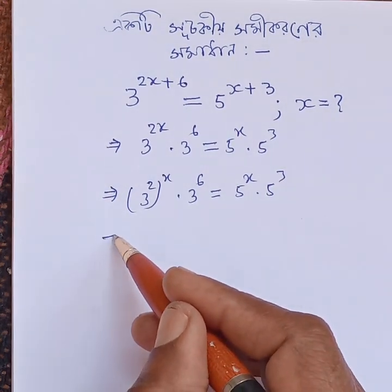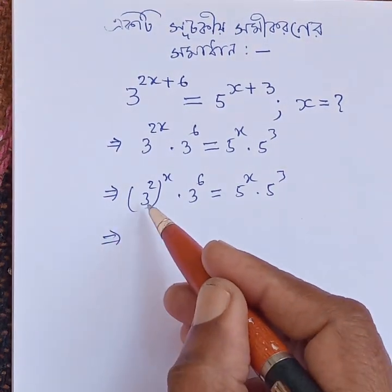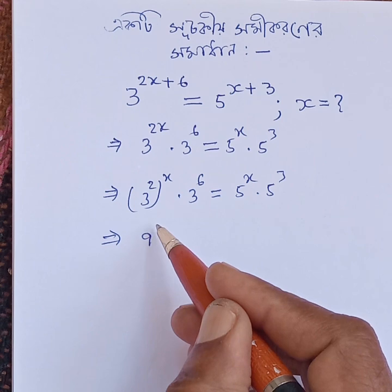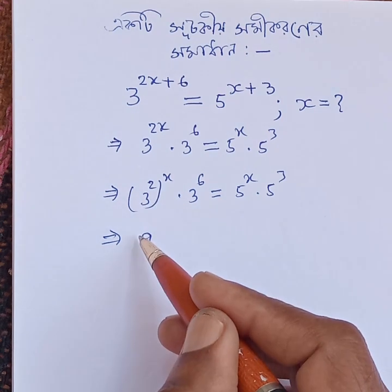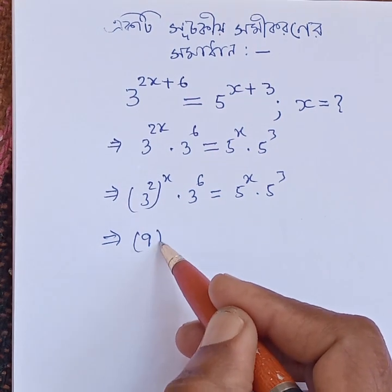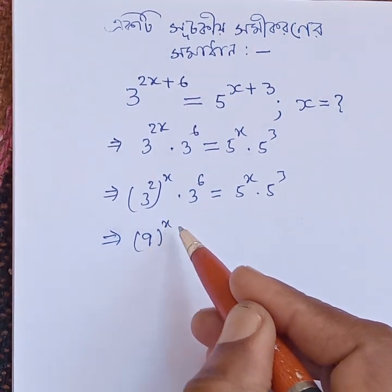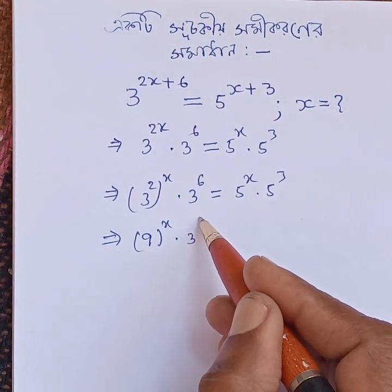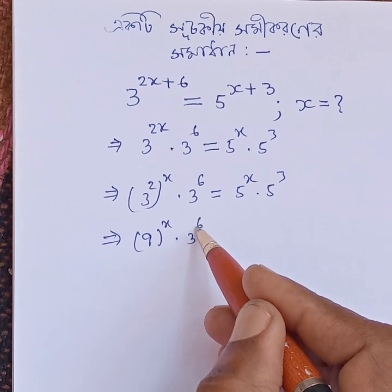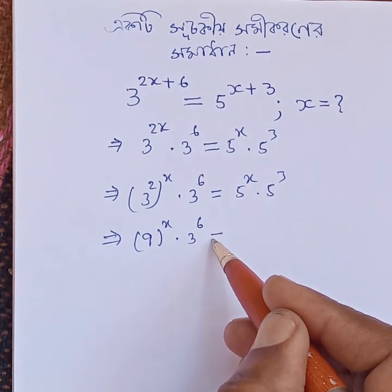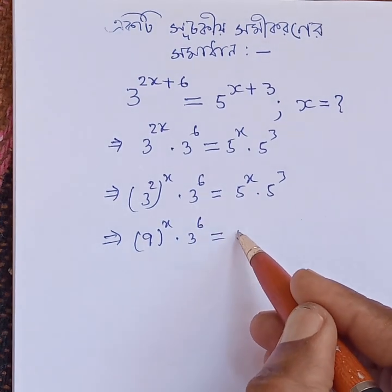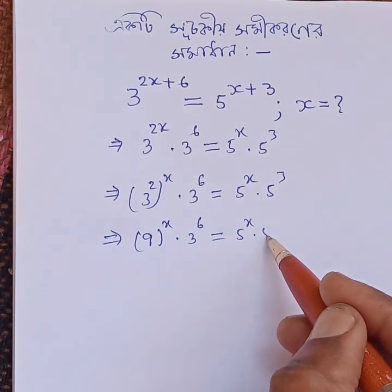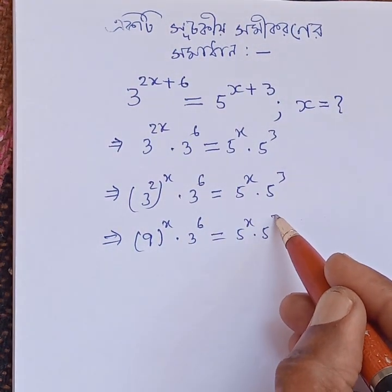This implies 9 to the power of x into 3 to the power of 6 is equal to 5 to the power of x into 5 to the power of 3.